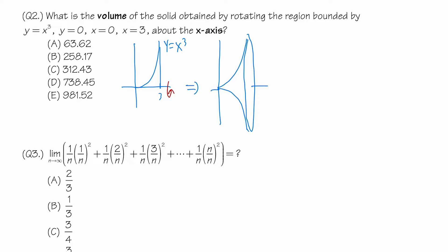To find the volume, draw a little rectangle — it doesn't matter if it's left or right end. If you rotate this rectangle, you get a disc, which is a very thin cylinder. The volume of a disc is the area of the circle, π r², times the thickness dx.